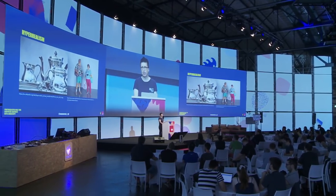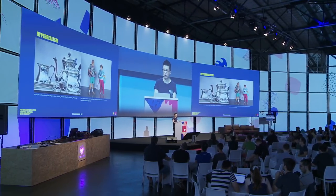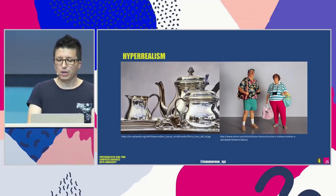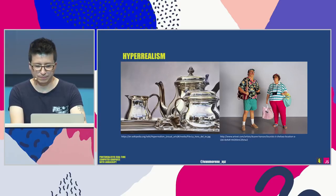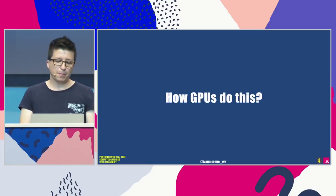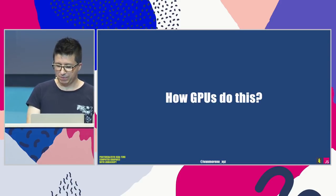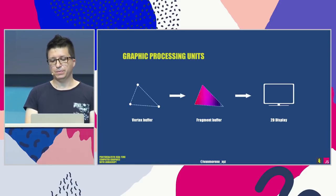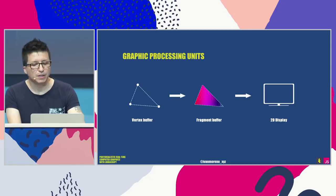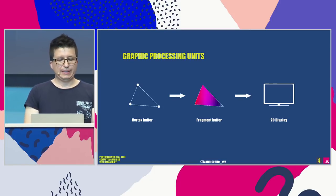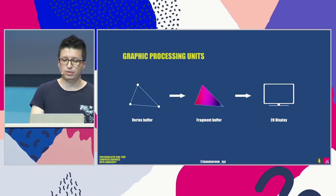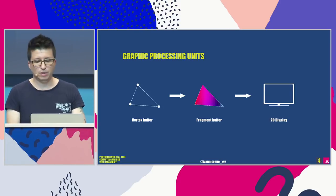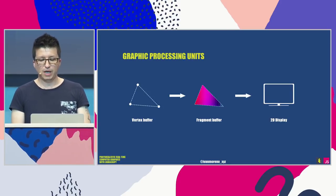Knowing what brush or paint texture to use will define your final imagery output and your audience. To understand how GPUs do all this, there are two sides you need to take care of: the vertex buffer, or geometry buffer, and the fragment buffer, or pixel buffer. As the names describe, one handles the geometry data and the other handles the fragment data.